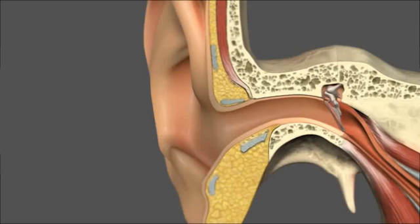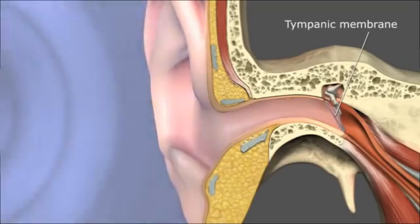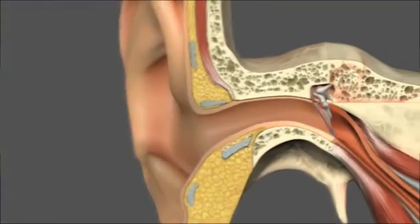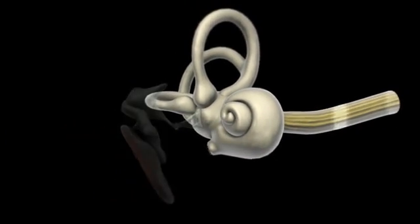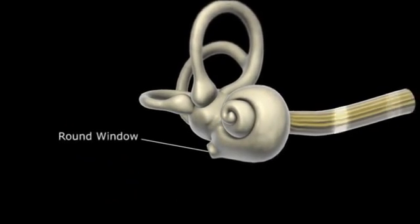How does sound enter the cochlea? Compression hits the tympanic membrane, causing the stapes to transfer force to the oval window. From there, sound moves to the round window.